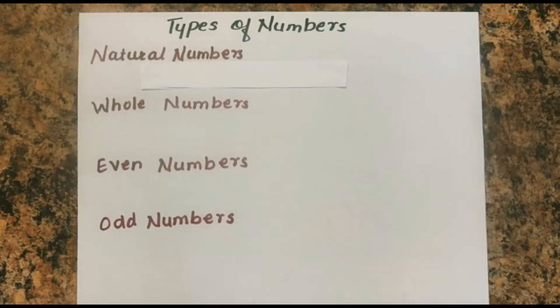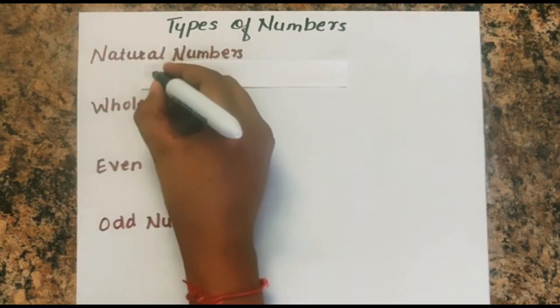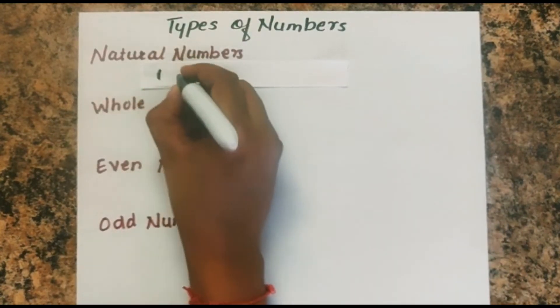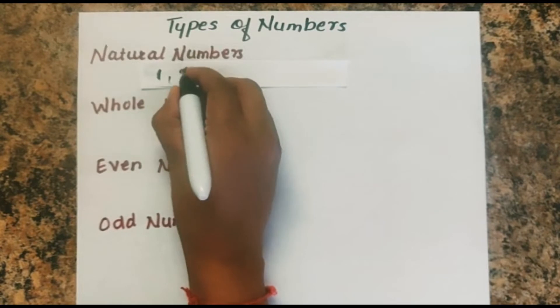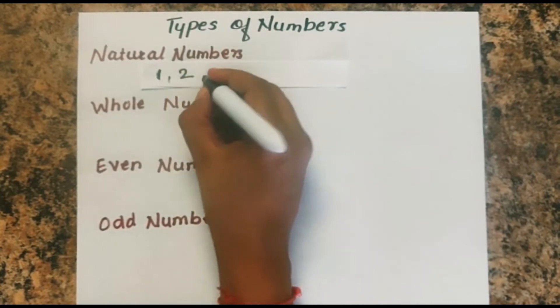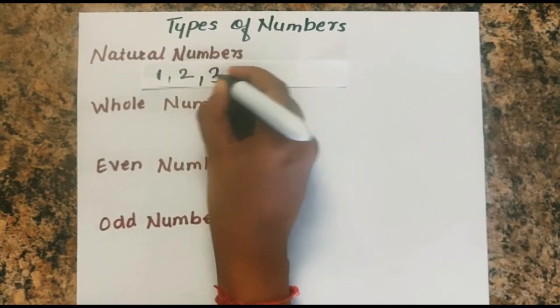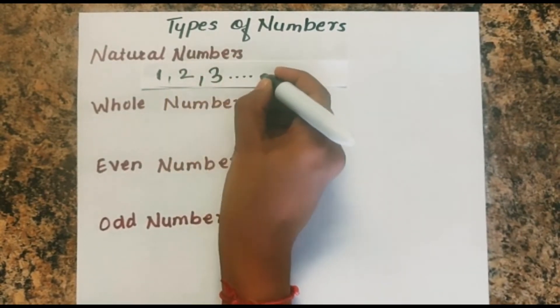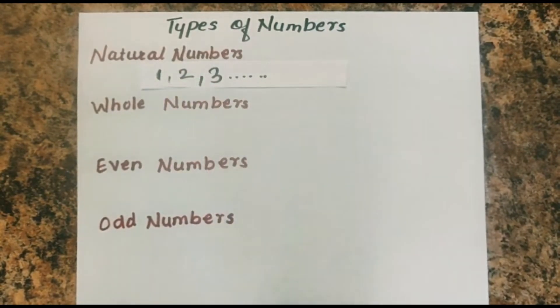Let's see the types of numbers. Natural numbers are numbers which start from 1, 2, 3 and so on. These are called natural numbers.